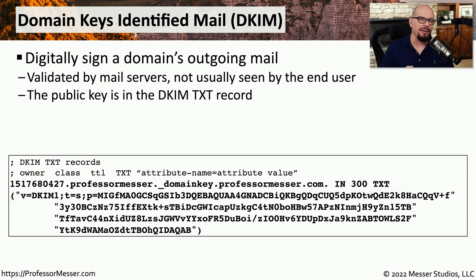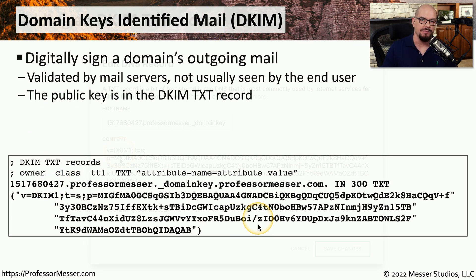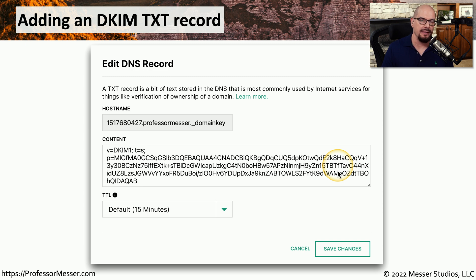We can even take this email security one step further and provide a digital signature that we can associate with outgoing mail. We do this through the use of a DKIM text record, or Domain Keys Identified Mail. This is going to be validated by the mail servers as that message is traversing the network, and the public key associated with this digital signature is added to a text record in your DNS server. Here's the configuration for that DKIM record in the web-based frontend — you can see it's a large bit of text that is the public key for all of the digital signatures sent from my domain.